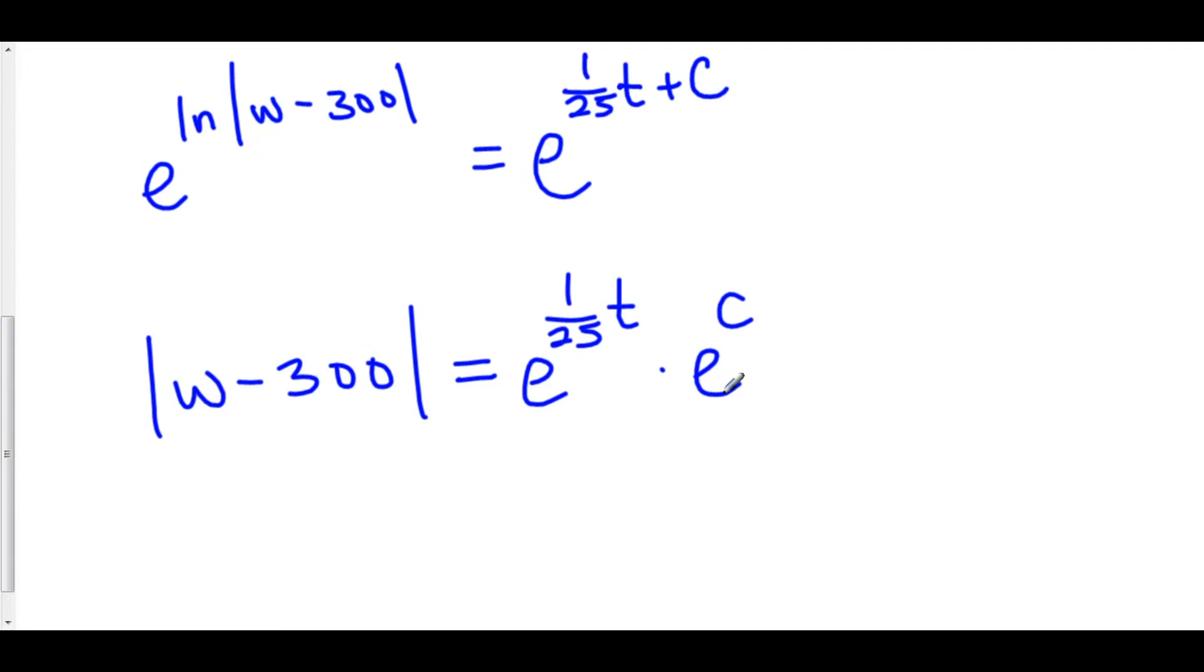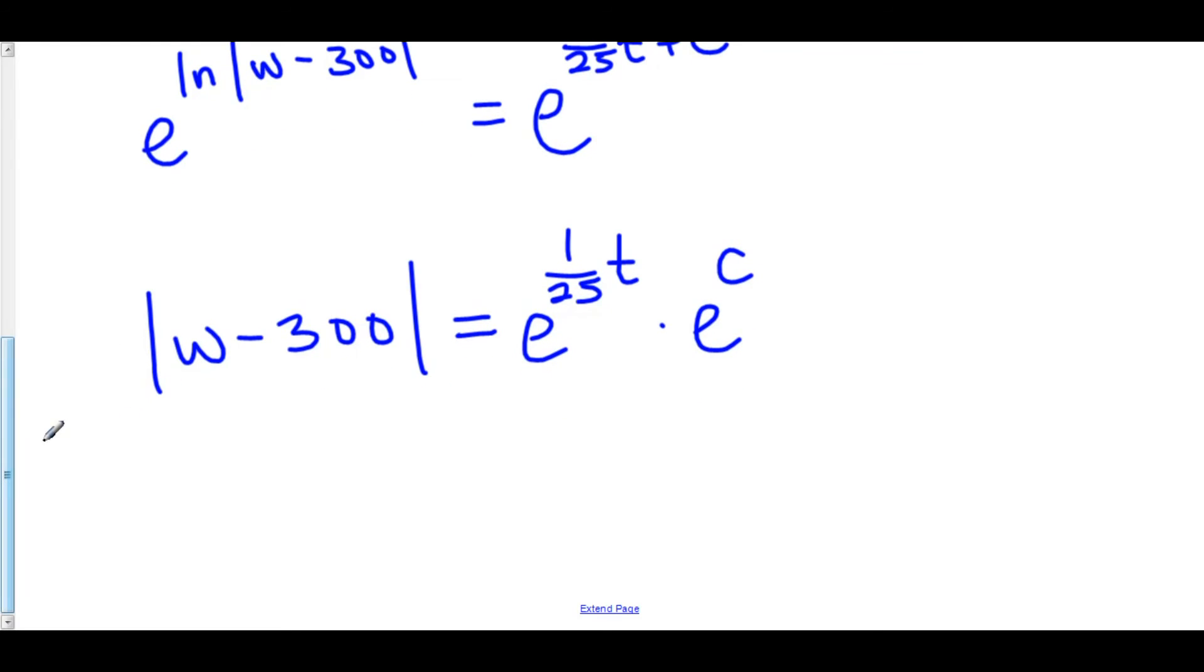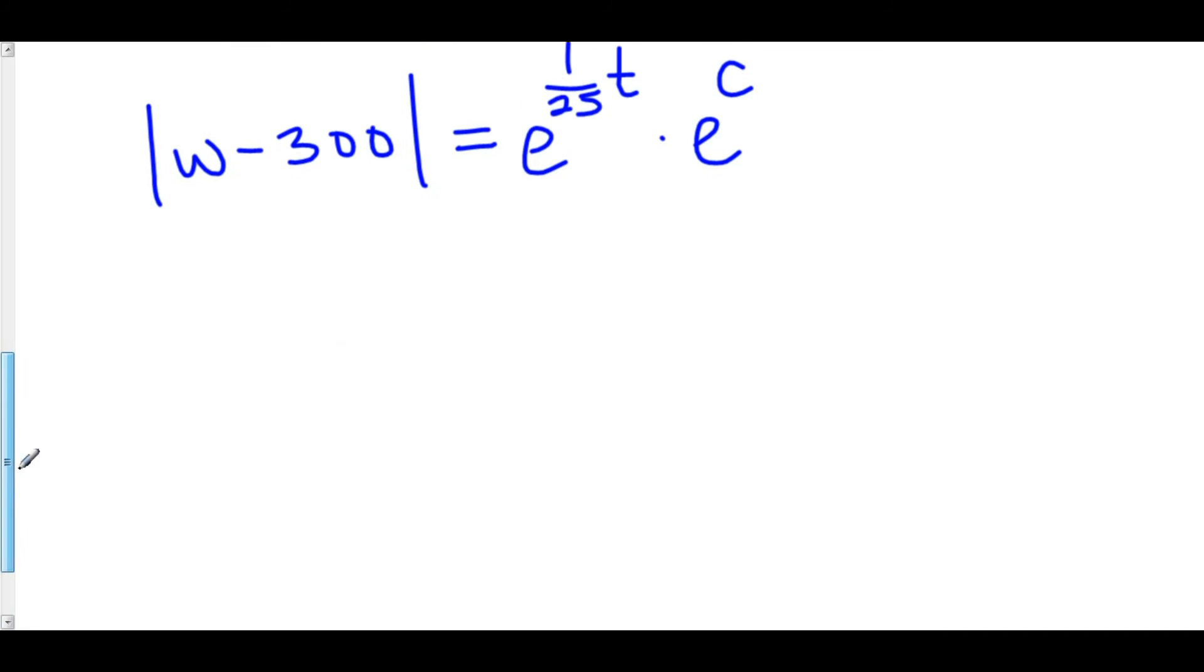Now e is just some number, 2.71 blah blah blah. We have some number raised to some constant c. That's just an entirely new constant c, which is the really awesome thing. So here we have the absolute value of w minus 300 is equal to c times e^(1/25t).